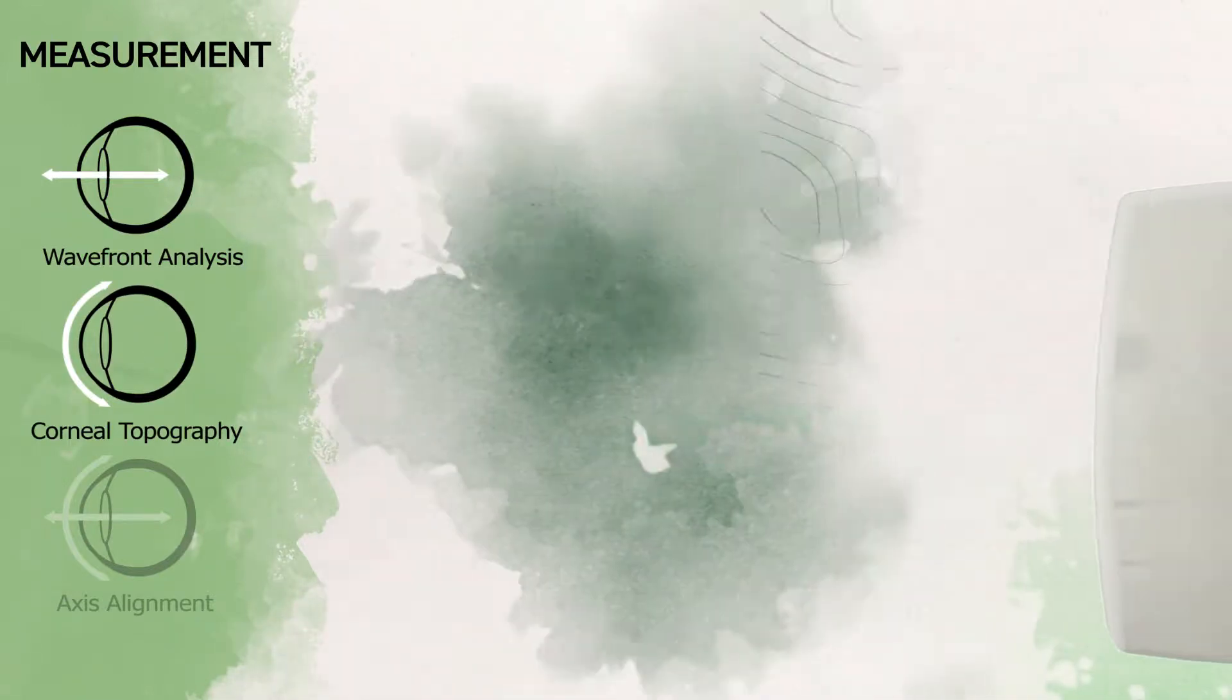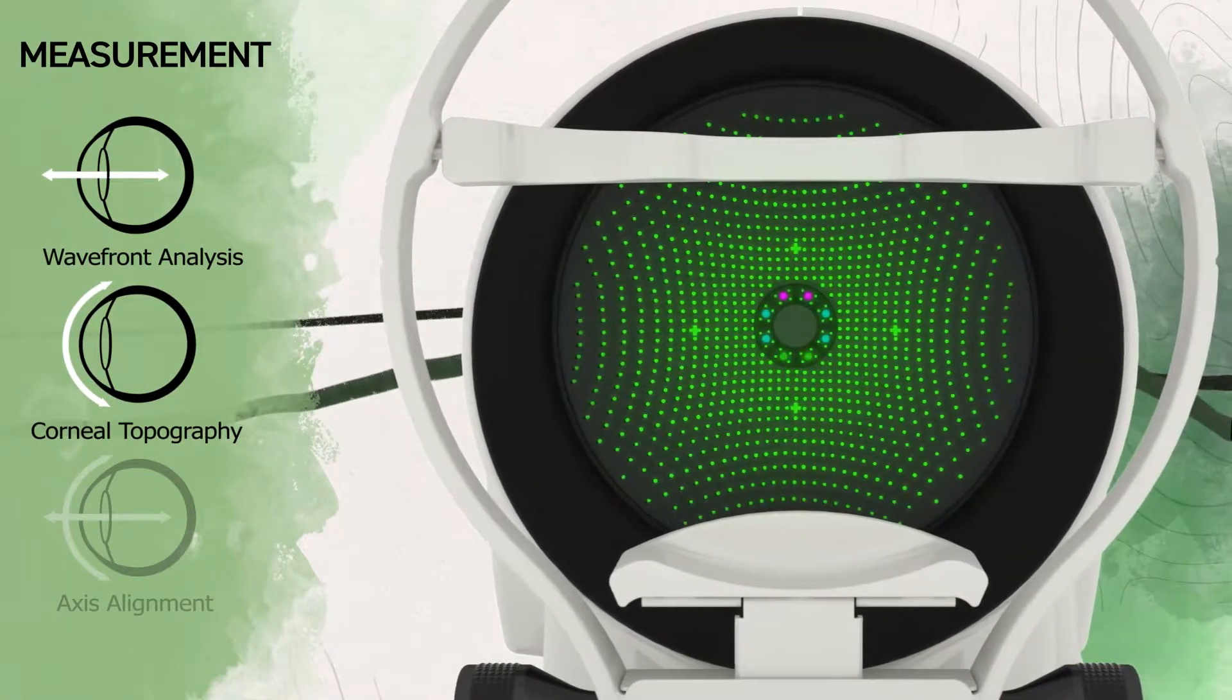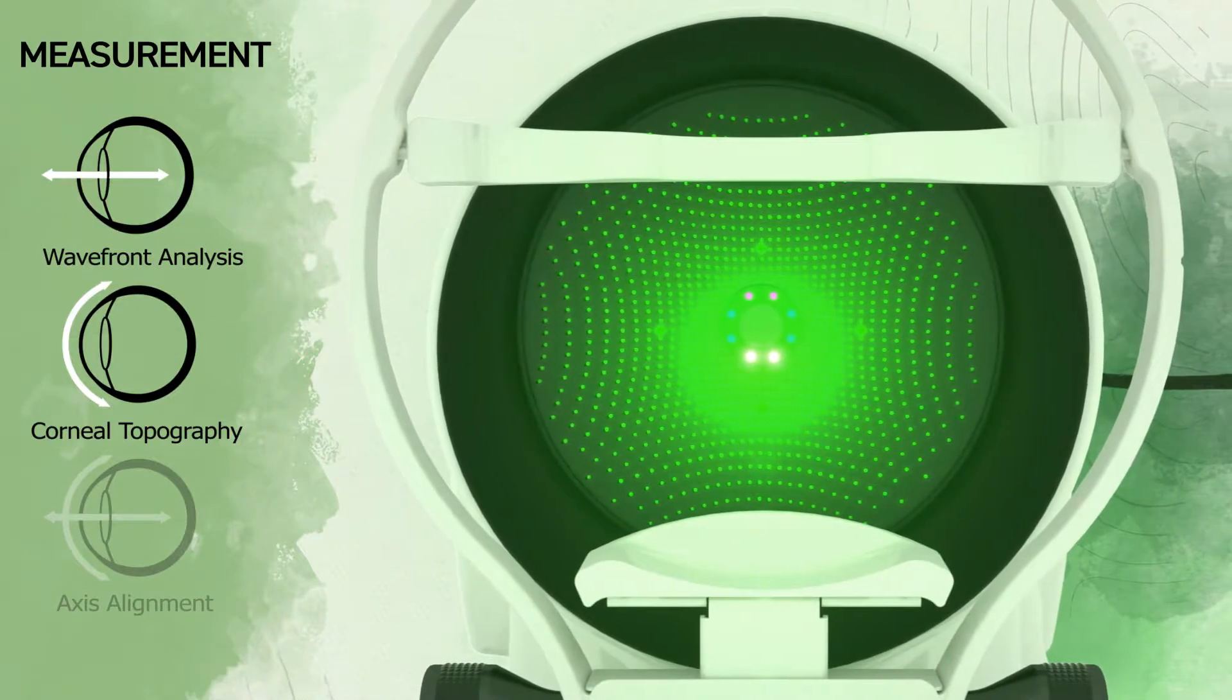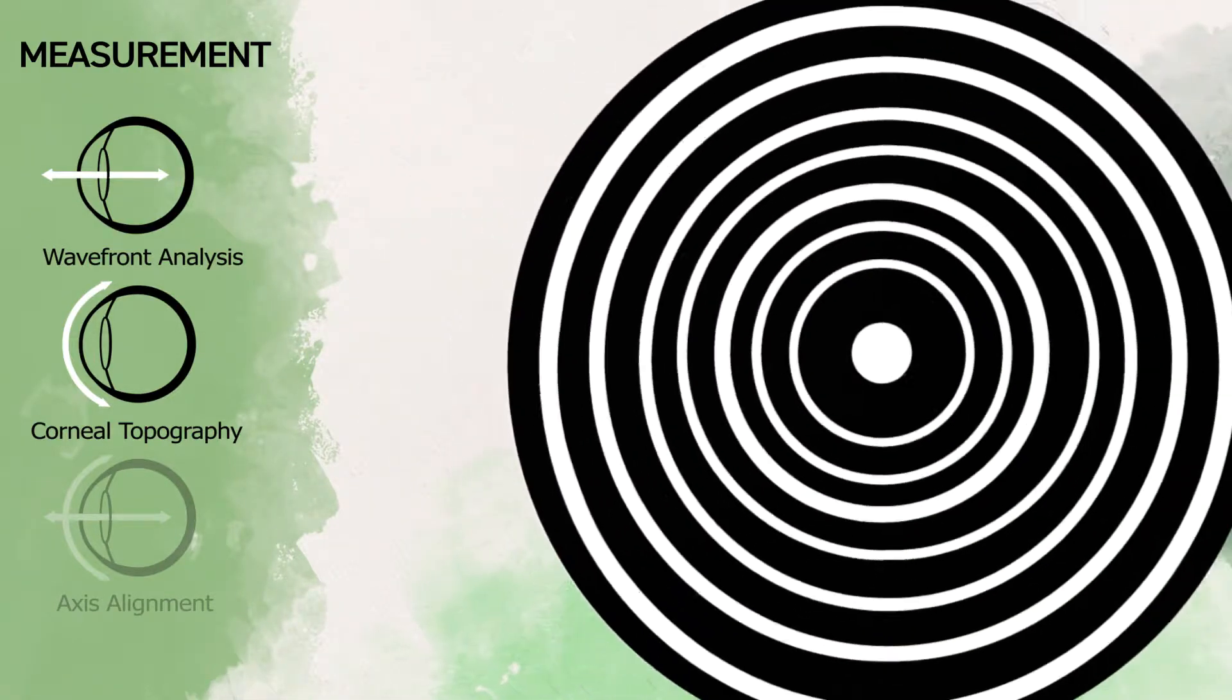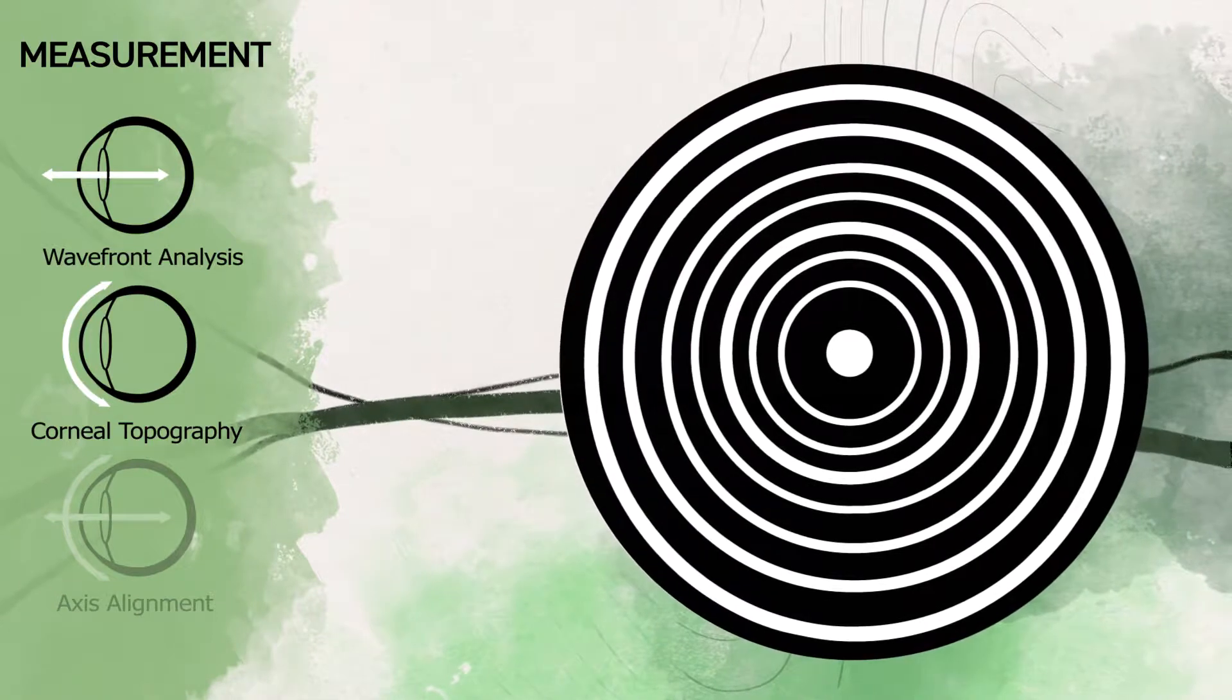This maps the cornea by projecting a pattern of spots that measure the x and y slopes at each point, instead of relying on a placido disc topographer which only measures radial slope along its concentric rings.